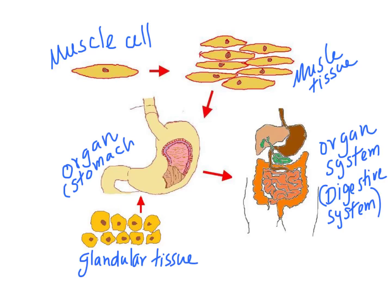Looking at the bigger picture: starting from a muscle cell, you get muscle tissue — a group of similar cells that are similar in structure and function, as these cells can contract and relax. A collection of different types of tissues makes an organ. One example of another tissue in the stomach is glandular tissue.